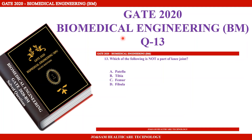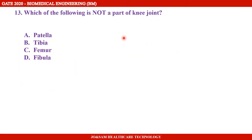Welcome to Joe and Sam Healthcare Technology. Let's talk about the GATE 2020 exam biomedical engineering paper, 13th question. The question is from biomechanics: which of the following is not a part of the knee joint? Option A: patella, Option B: tibia, Option C: femur, Option D: fibula. We can solve this using basic concepts.